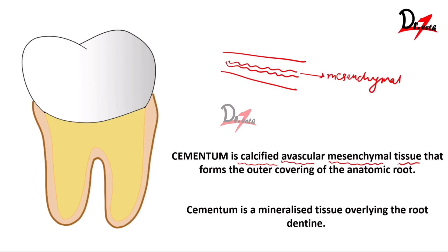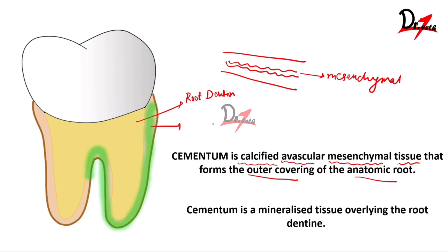Cementum is a mesenchymal tissue and it forms the outer covering of the anatomic root. The anatomic root has root dentin, and covering the root dentin is the layer of cementum — so cementum is a mineralized tissue covering the root dentin.